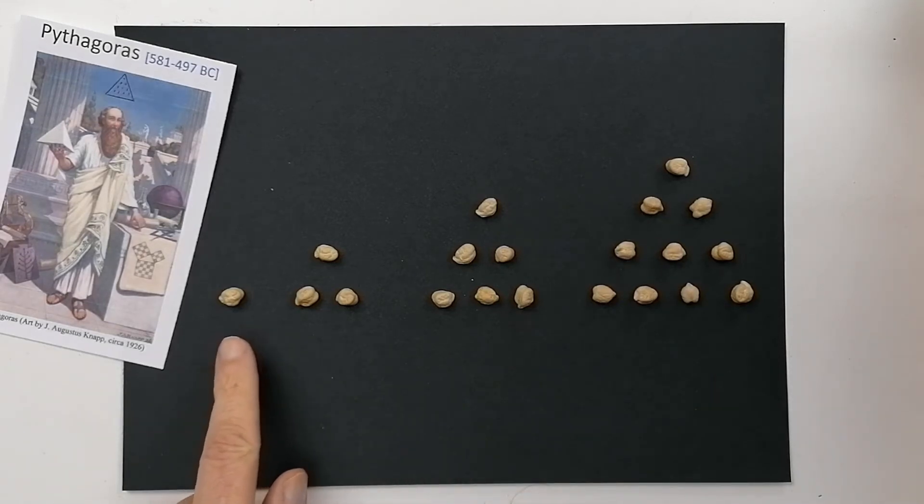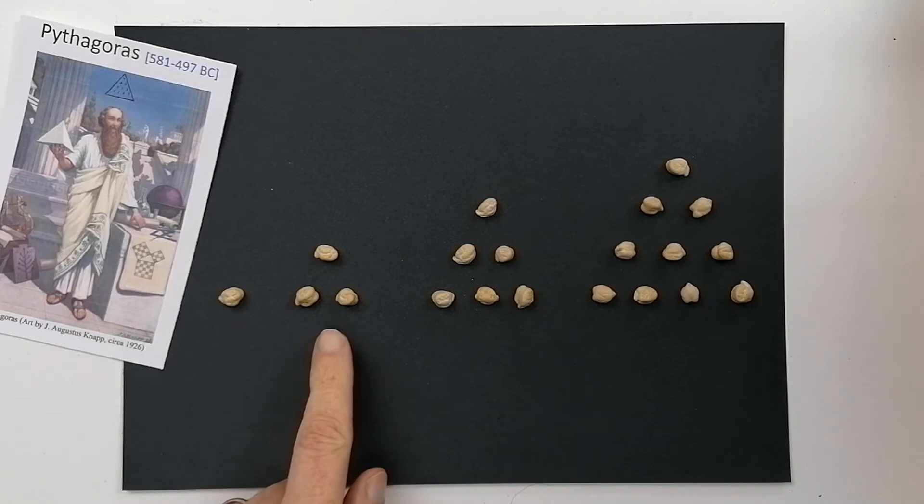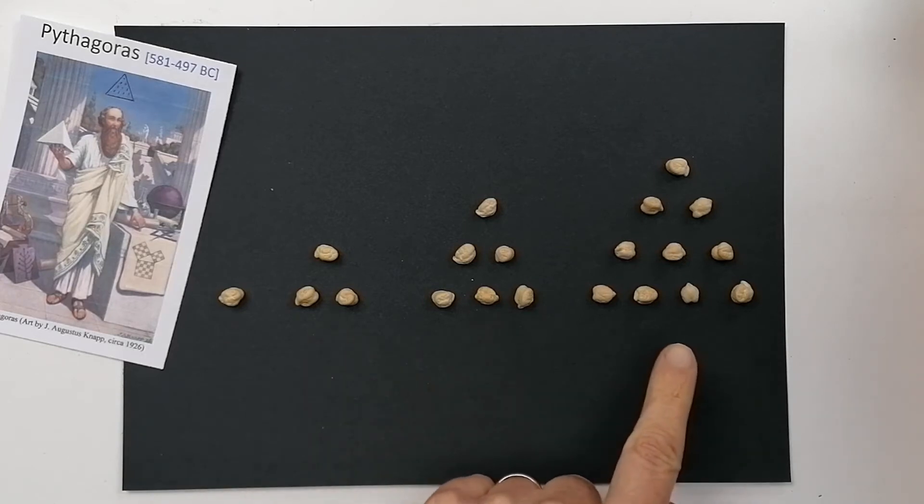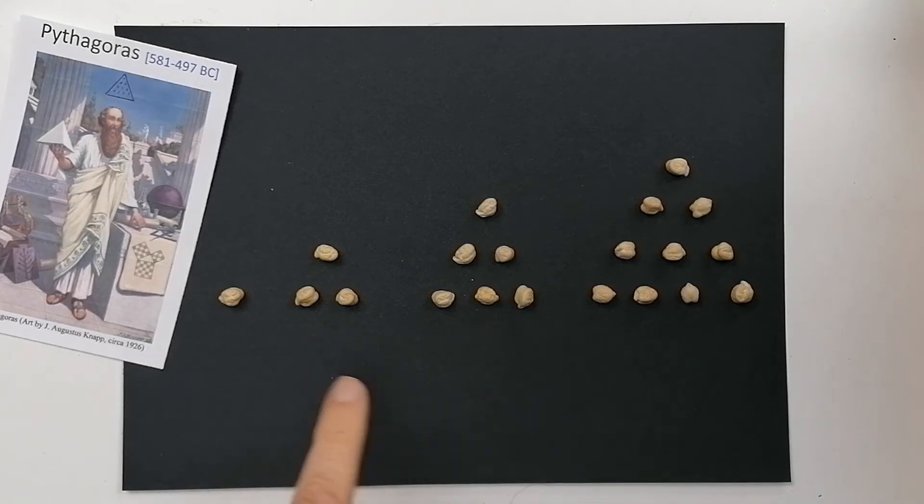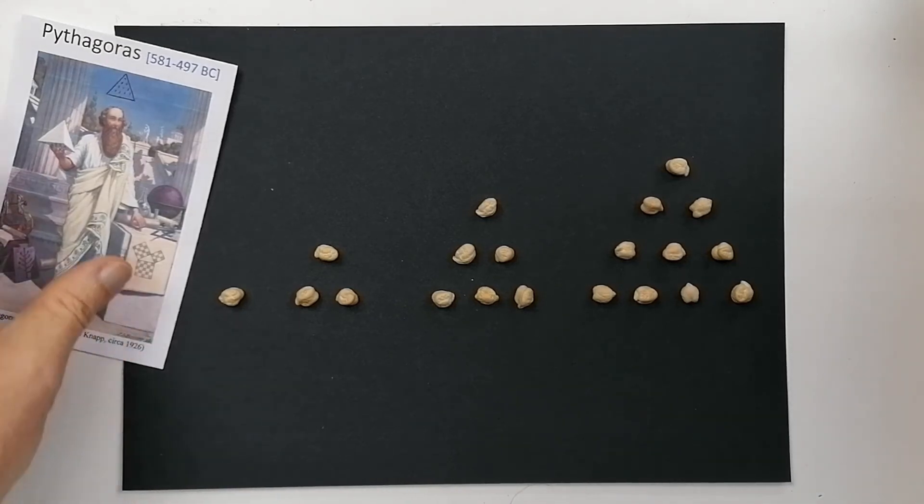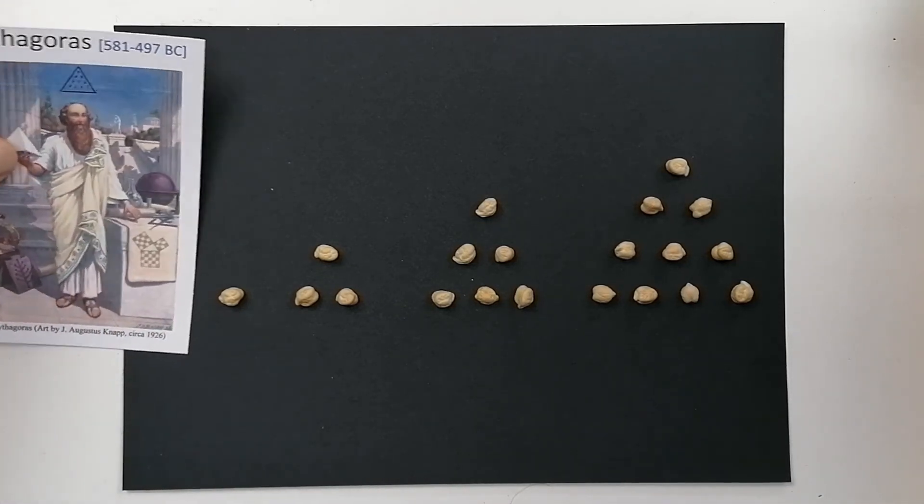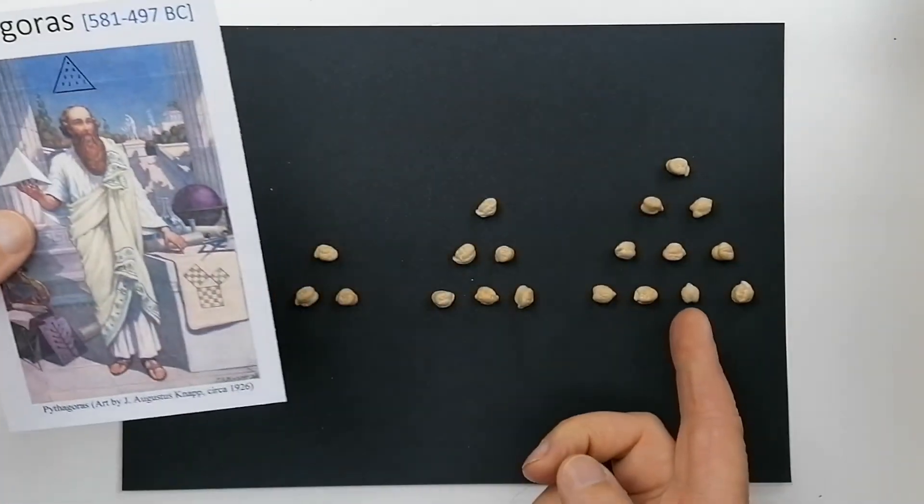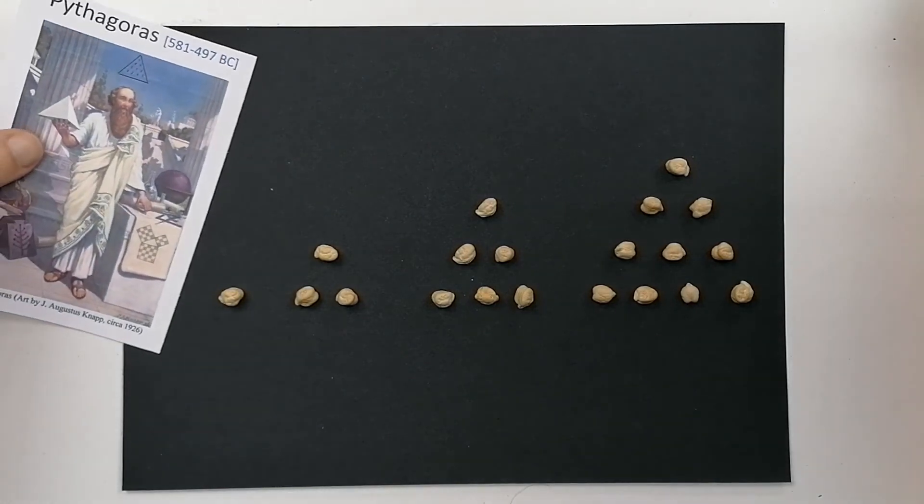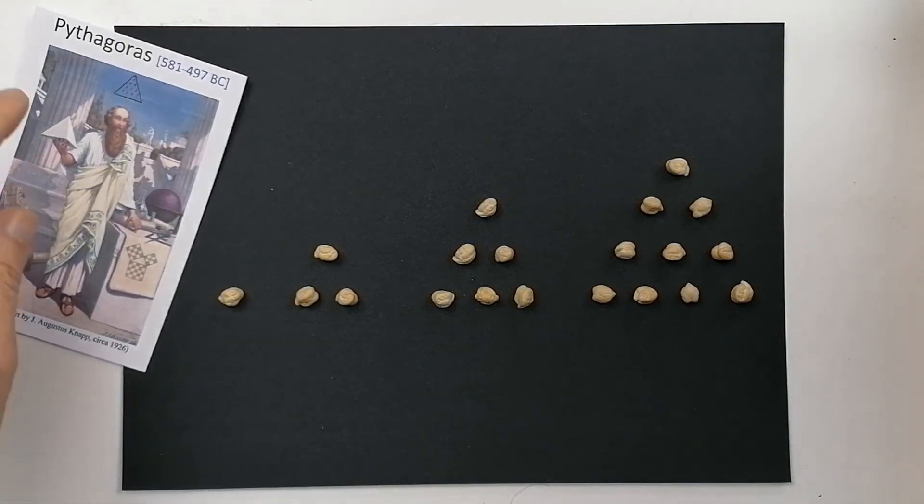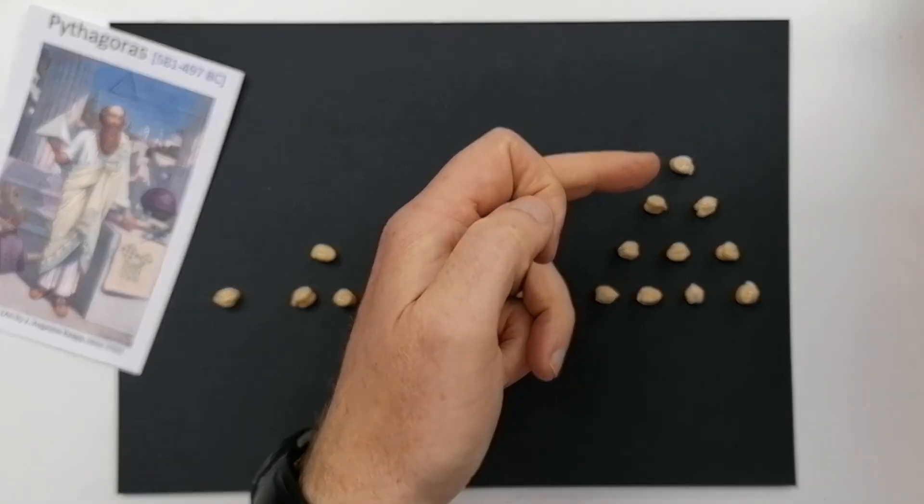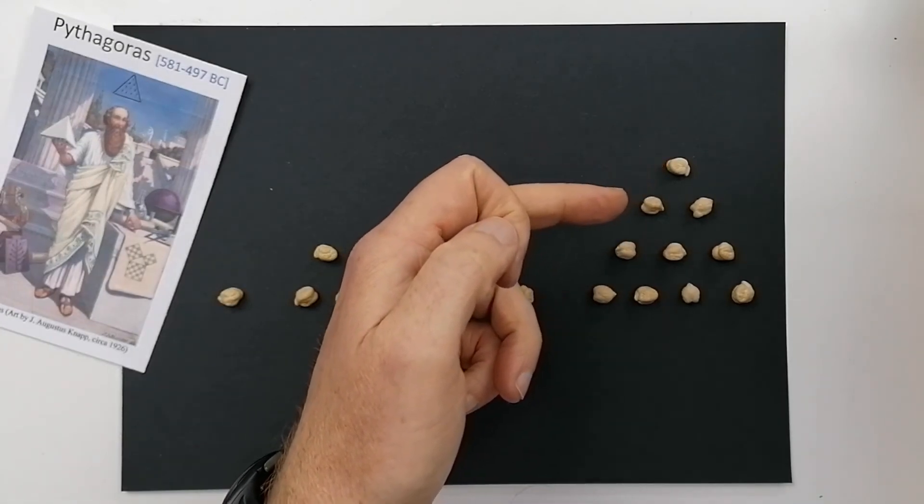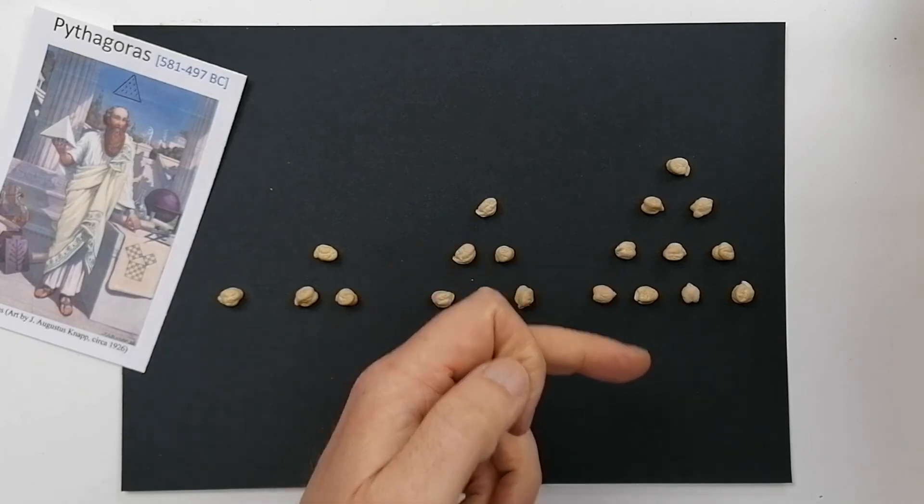So these are the triangular numbers, one, three, six, 10. They were so important to Pythagoras that the school of scholars that came from Pythagoras actually used it as a symbol. You can see it in this picture at the very top. That is actually this symbol here. And it's very important because it links Pythagoras who did a lot of work on music. And it is the addition of the first four numbers, one plus two plus three plus four, which is 10.